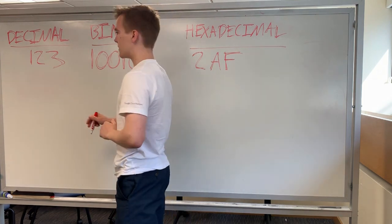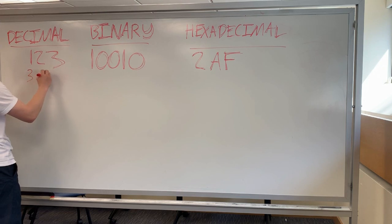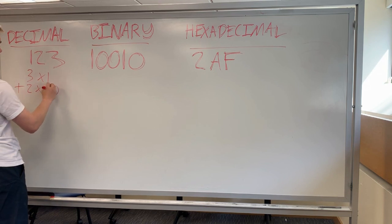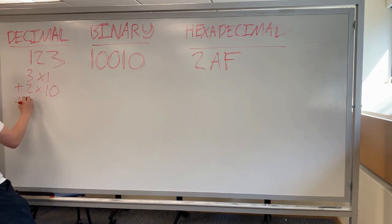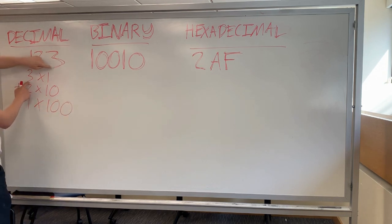So really quickly, just to review decimal, this number is 123, but you can also think of it as 3 times 1 plus 2 times 10 plus 1 times 100. So here's that 1, here's that 2, here's that 3.